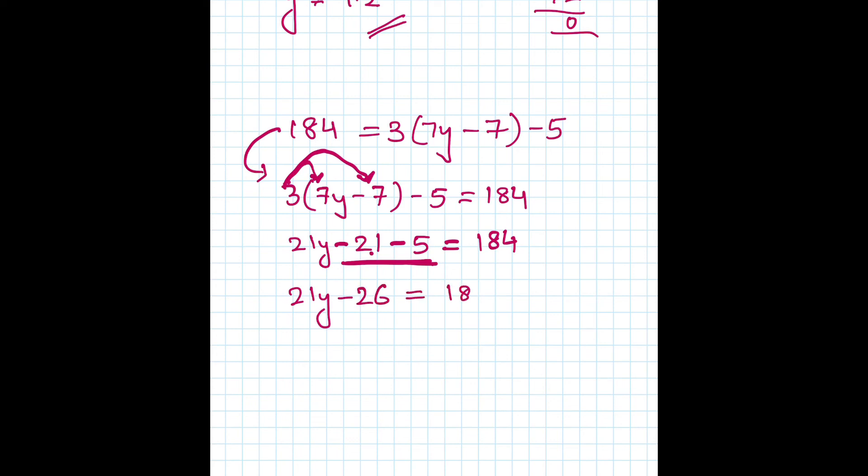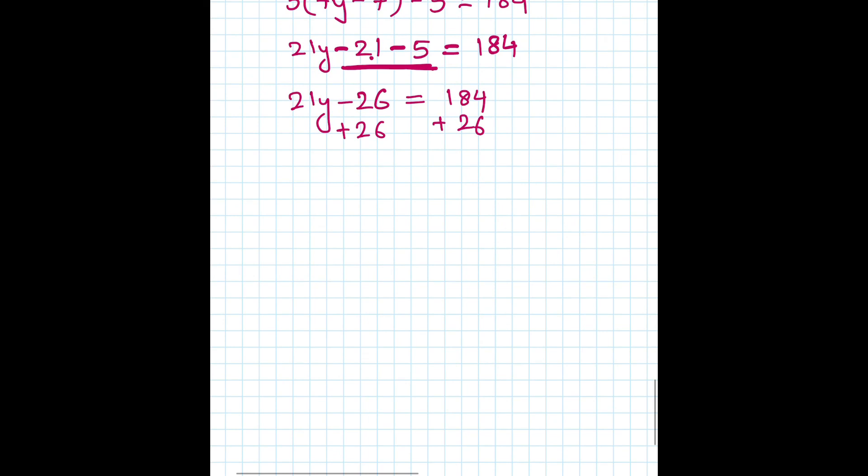It's minus so we have to add 26 on both sides. So when we add 26 on both sides that cancels, so we have 21y. 184 plus 26 gives us, 1 carry 1, 11, and 210. Then divide by 21 on both sides. You get y equals 10, because 210 divided by 21 is 10.